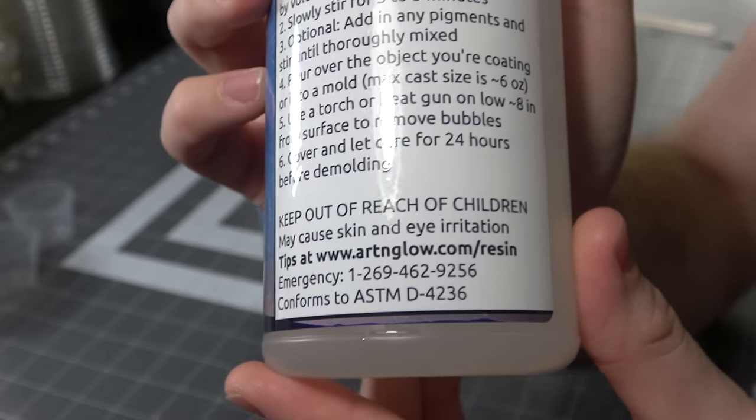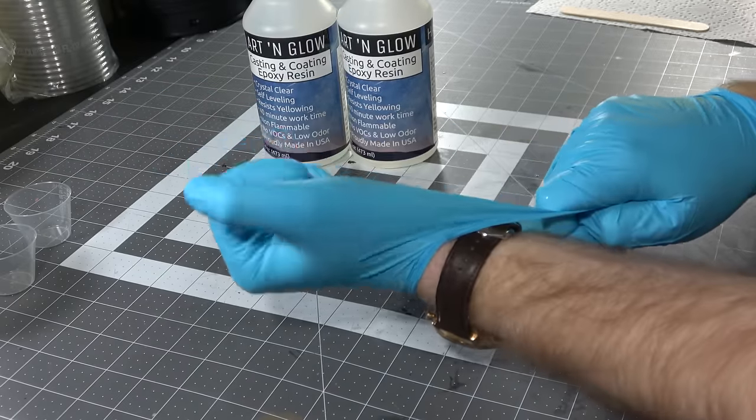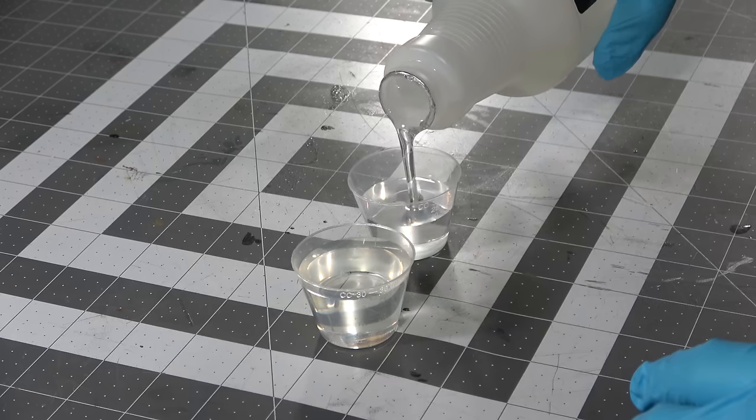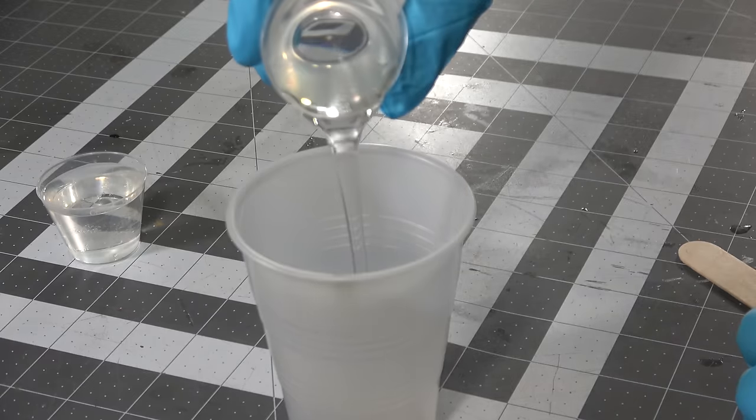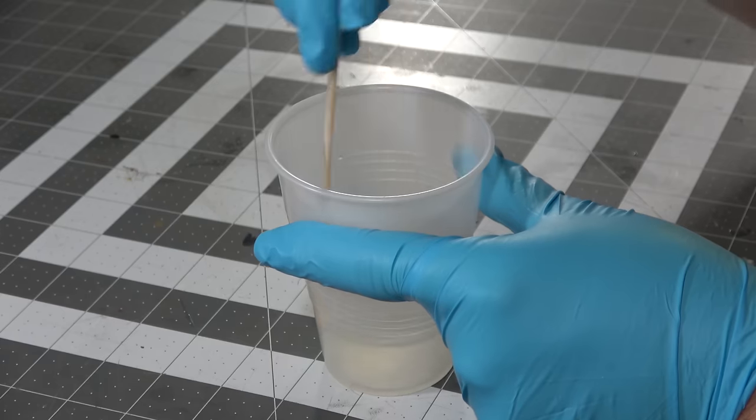We're going to make some resin here with this Art & Glow resin and make sure you follow the safety information on there like wear gloves and wear respirator rated for fumes. I'm going to mix up two equal parts and we're going to put an equal part of resin into the pressure pot and an equal part of resin into the vacuum chamber so that I can show you the differences.